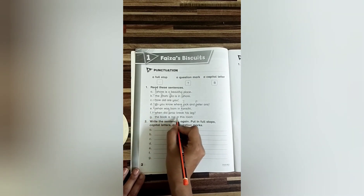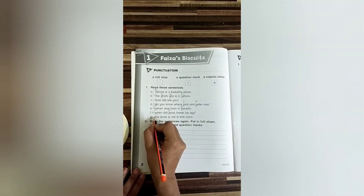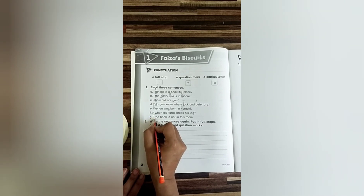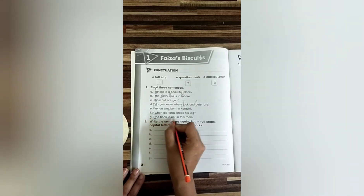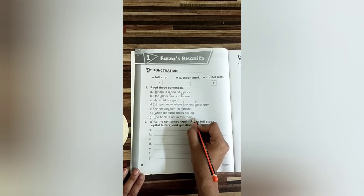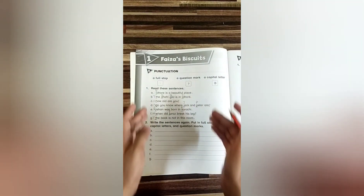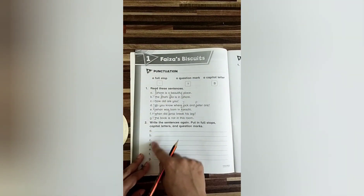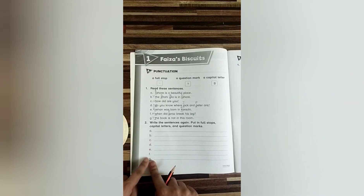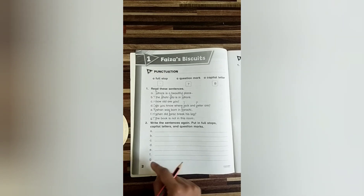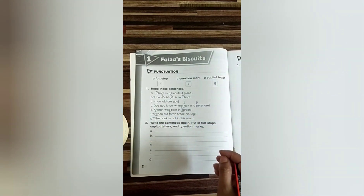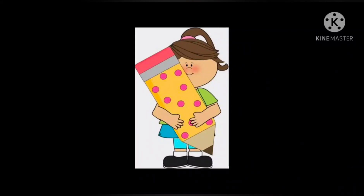Sentence G: 'The book is not in the room.' That is a simple sentence, so put the T in capital form. 'The book is not in the room.' Put a full stop at the end. That is how you are going to do this exercise — you will rewrite the sentences on the lines given for A, B, C, D, E, F, and G. Remember the punctuation rules and start doing your work very neatly. Now grab your pencils and start. Thank you.